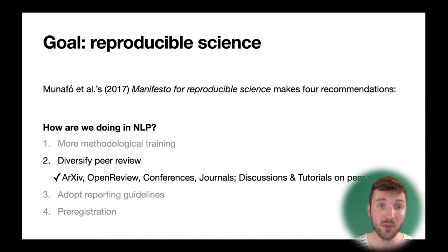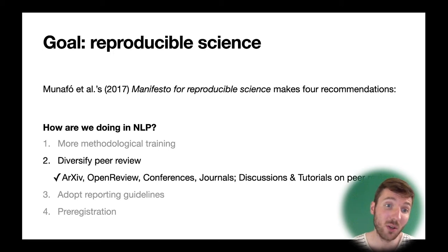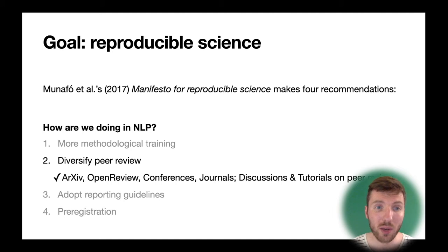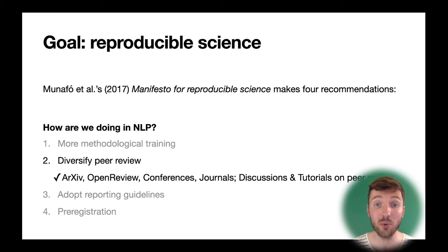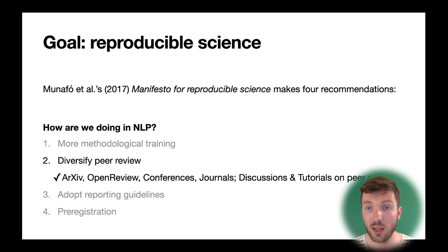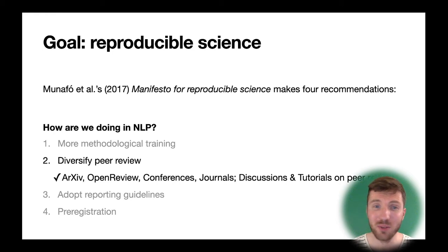On the second point of diversifying peer review, I think we're ahead of the curve. Munafo et al., for example, recommend preprints, which are already widely adopted in NLP. We also have a very wide range of different venues where people can publish their work, so most work gets to see the light of day. At the same time, there are many discussions on how to improve the peer review process even further, and there are also tutorials at recent ACL events on teaching people how to review a paper.